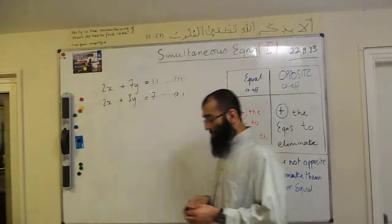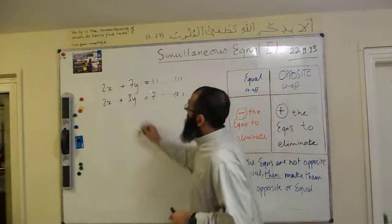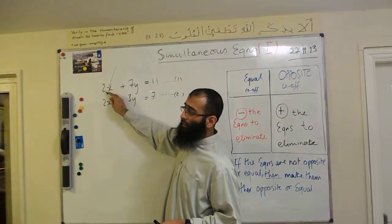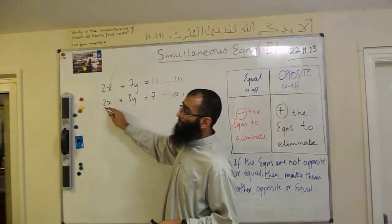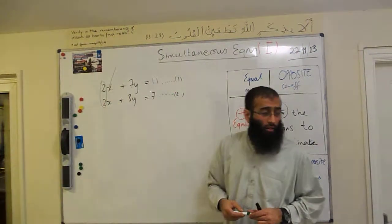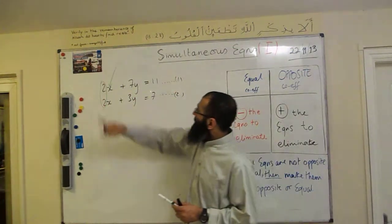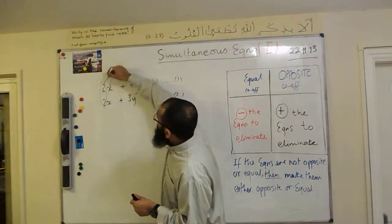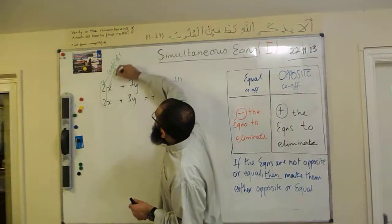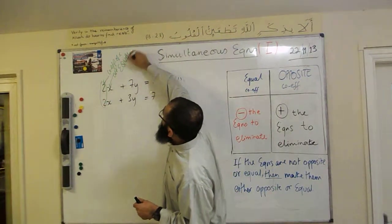So, as we said before, let's have a look at the coefficients now. So Najma, if I'm looking at the x — x is first — the coefficient of x is 2, and the coefficient of this x is also 2. Mr. Saif, the coefficients of x are the numbers in front, the multipliers. So these coefficients of x are — the key word here is — equal.